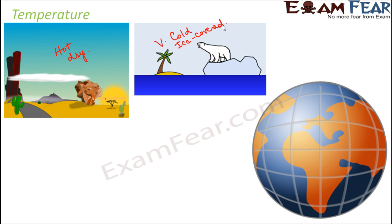Now if you look at the Earth, the equatorial region receives maximum sunlight, therefore temperature is maximum there. As we go away from the equator towards the poles — North Pole and South Pole — temperatures start to decrease. Also, as height increases from the surface, temperatures start to decrease. That is why hill stations are comparatively colder than the plains.